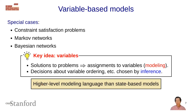You can think of variable-based models as a higher-level modeling language than state-based models. Here's a programming language analogy: solving a problem ad hoc is like writing assembly; using state-based models is like using C or C++, a higher-level abstraction that saves a lot of headaches; and variable-based models are like Python — an even higher-level language that lets you think purely in terms of variables and modeling, while the inference algorithm does more of the work, freeing you to spend more time on the fun part, which is modeling.